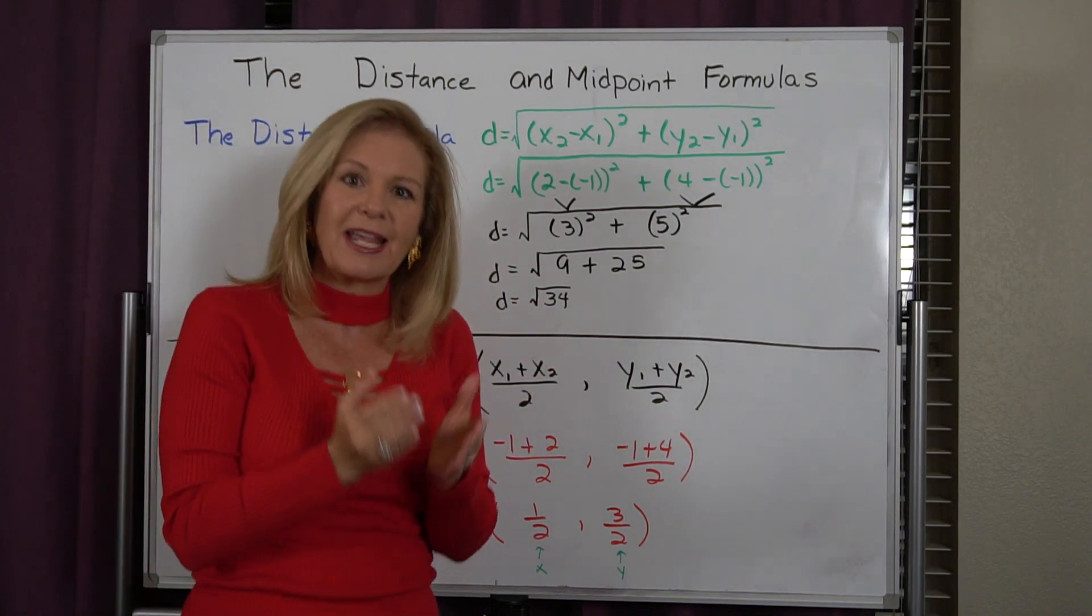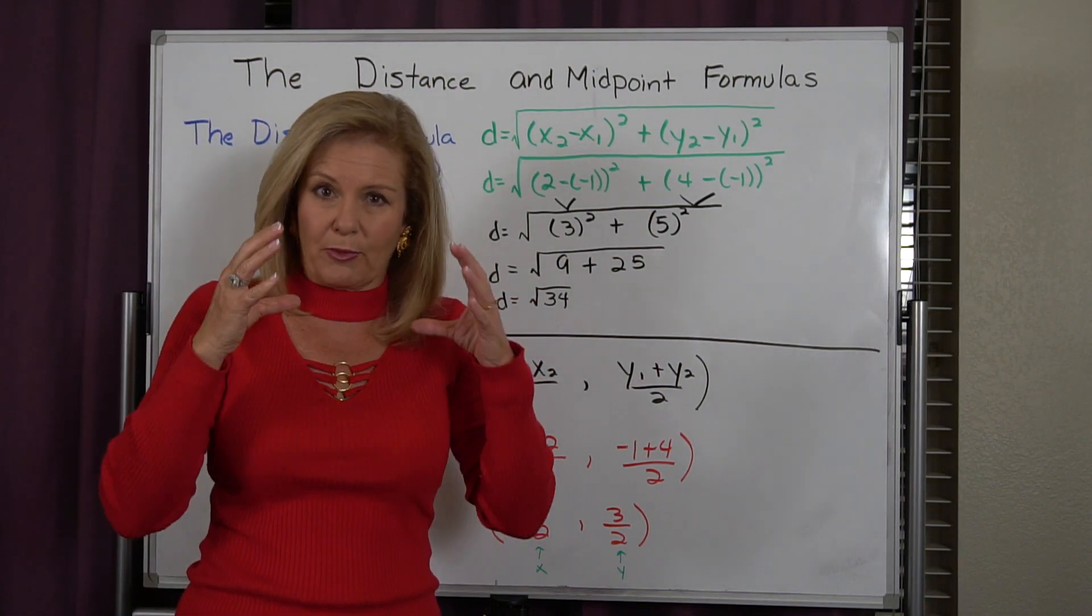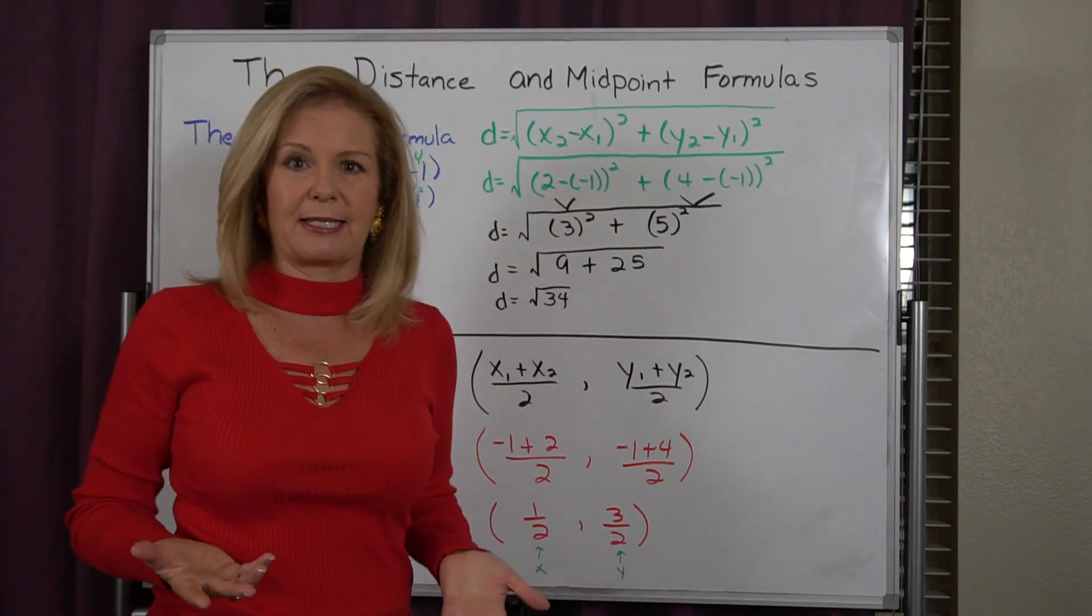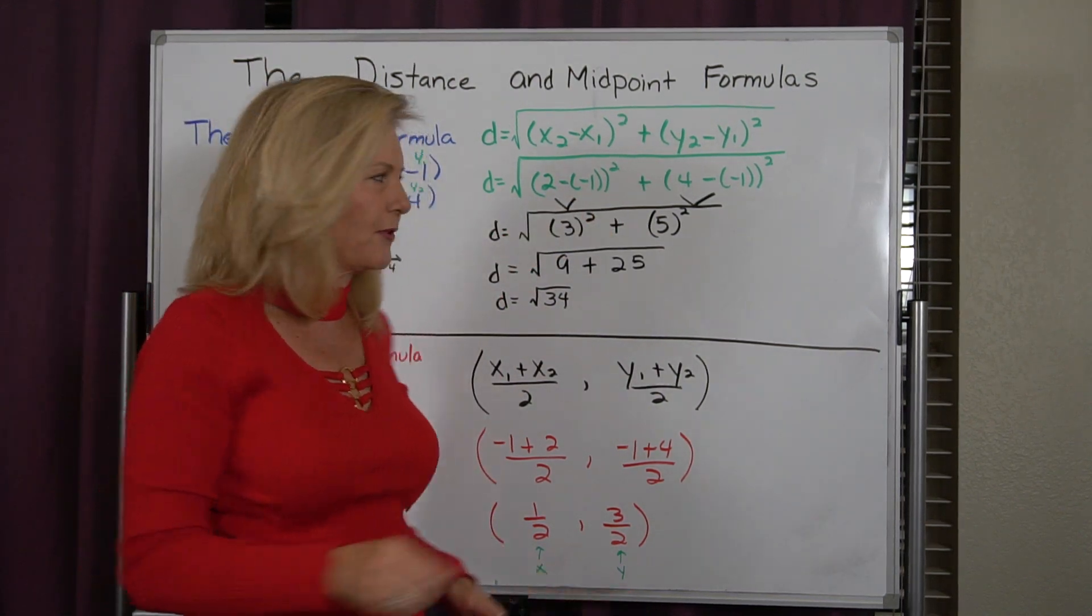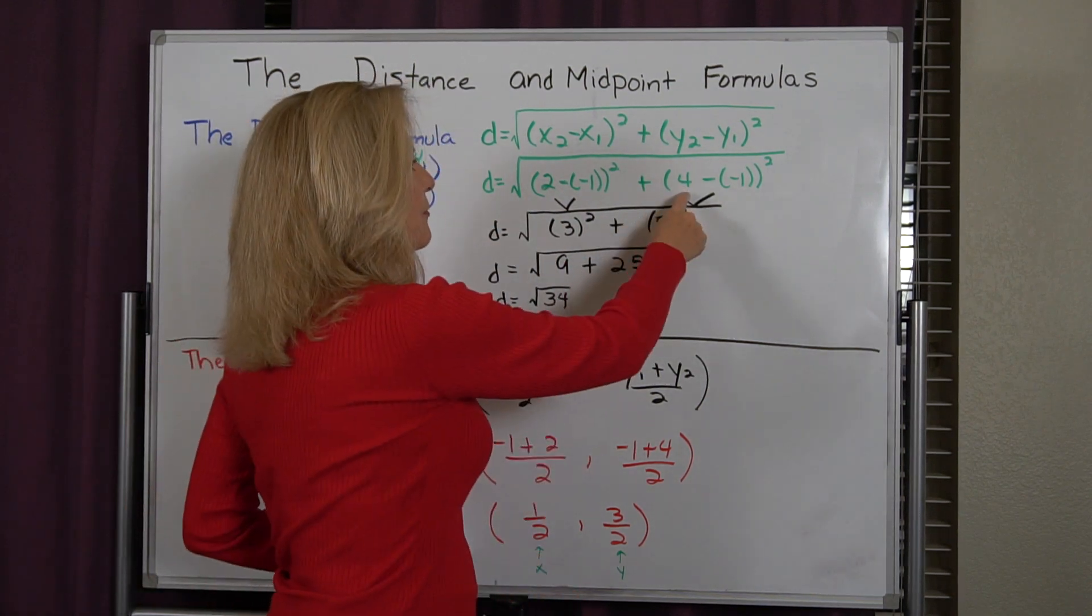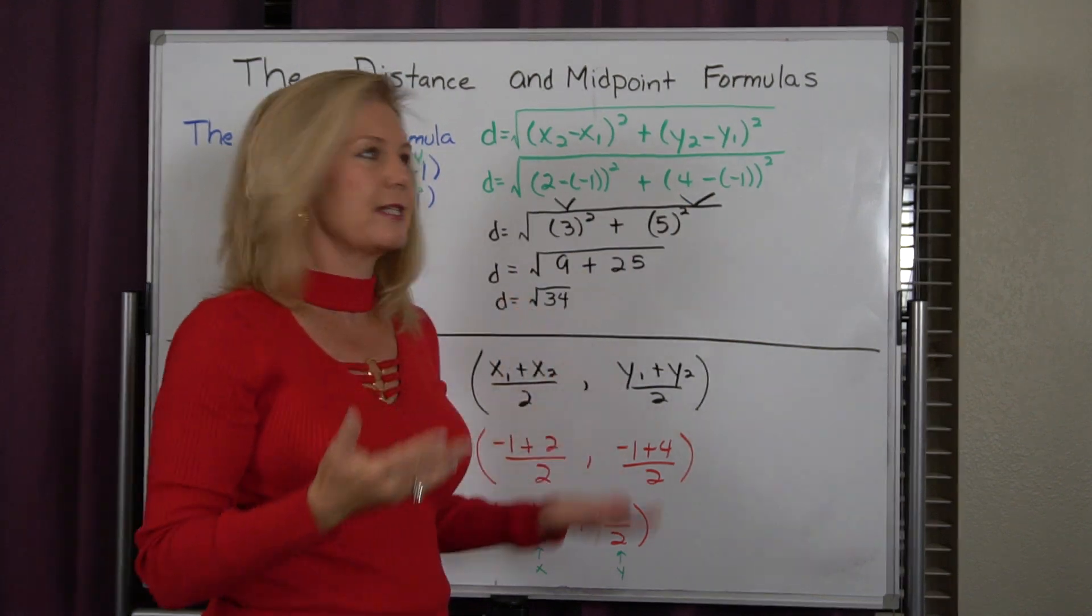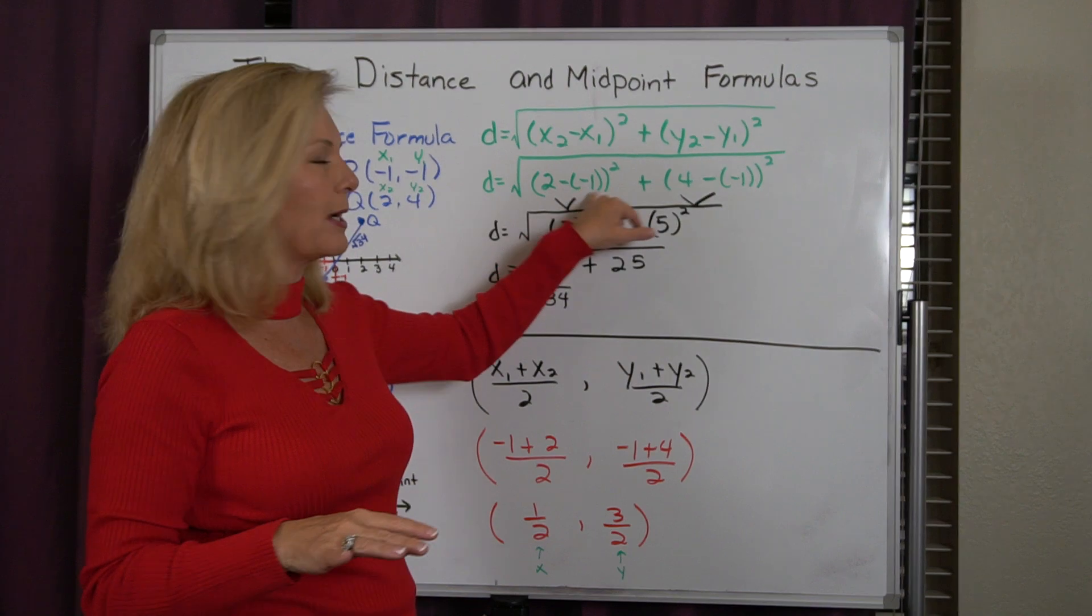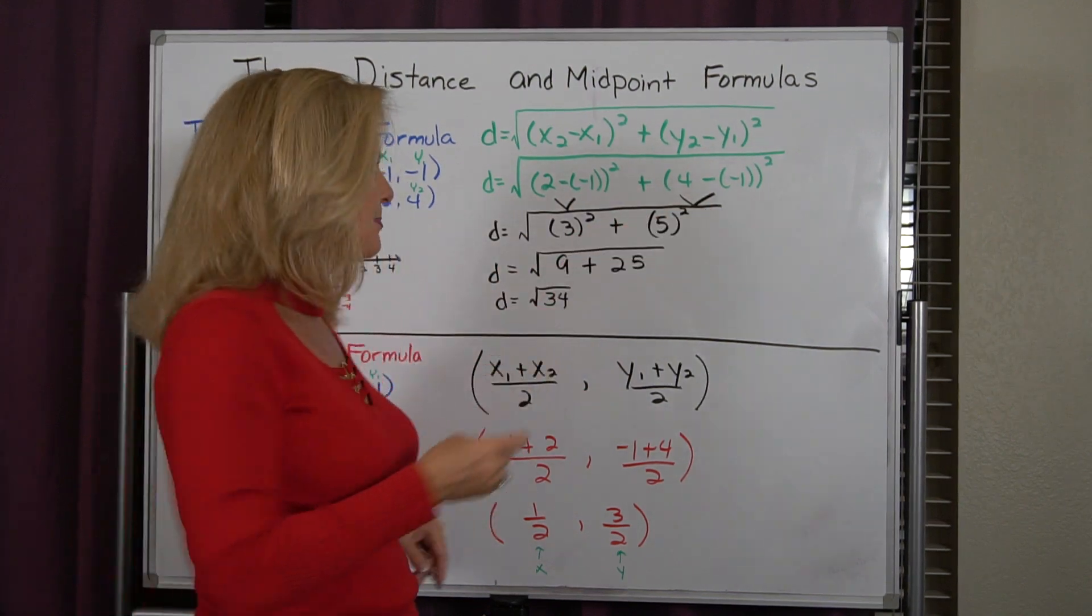We have to solve inside the radical sign first, and we have to follow order of operations. That means I have to do my parentheses first. I can't do my exponents first. So first I'm going to do 2 minus negative 1, which is 3. And I'm going to do 4 minus negative 1, which is 5.